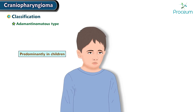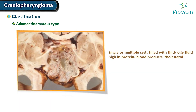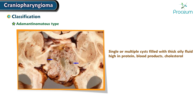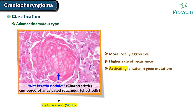The Adamantinomatous type is seen predominantly in children and is the most common form. It consists of reticular epithelial cells with appearances reminiscent of the enamel pulp of developing teeth. There may be single or multiple cysts filled with thick oily fluid high in protein, blood products, and/or cholesterol, creating the so-called machinery oil appearance. Wet keratin nodules are a characteristic histological feature. Calcification is usually present in 90% of cases. They are more locally aggressive with a higher rate of recurrence. Activating beta-catenin gene mutations are found in adamantinomatous tumors.